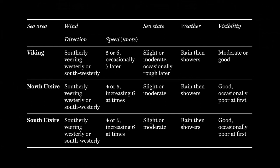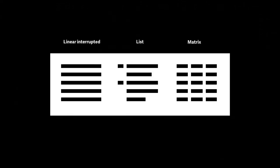Those two advantages are simultaneity and accessibility of information. At one glance we can see the overall structure of the forecast. We can focus on the data specific to a single sea area by reading across a row, but unlike the list we can also compare specific conditions in different areas by reading down a column. We can think of these three presentations as three different typographic configurations: prose — linear interrupted — a list, and finally a table, which typographers call a matrix.